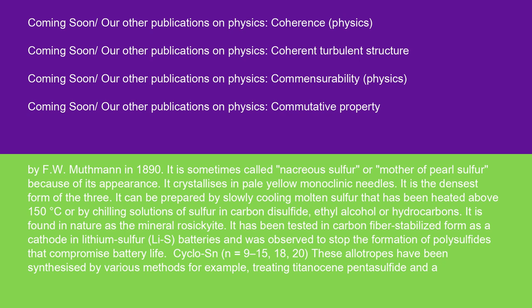Gamma-sulfur is found in nature as the mineral rosickyite. It has been tested in carbon-fiber-stabilized form as a cathode in lithium-sulfur (Li-S) batteries, and was observed to stop the formation of polysulfides that compromise battery life.